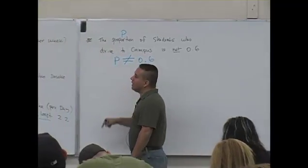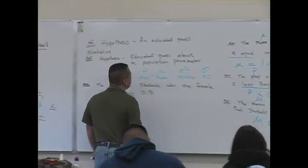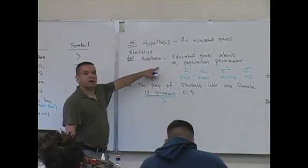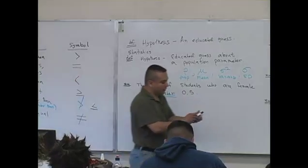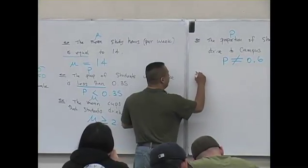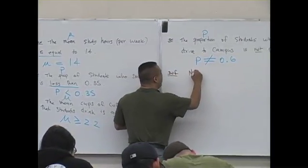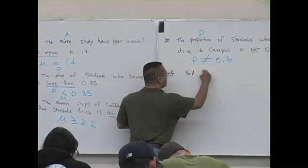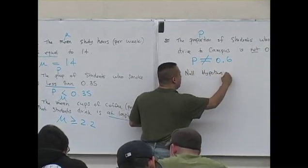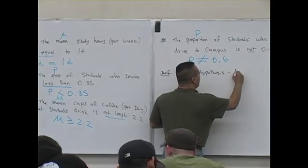These are educated guesses about population parameters. We have a few more definitions. The first is a null hypothesis: a null hypothesis is a hypothesis that involves equality.